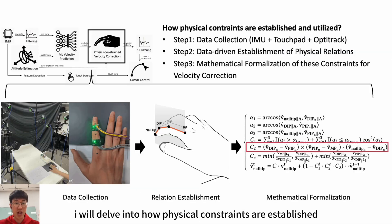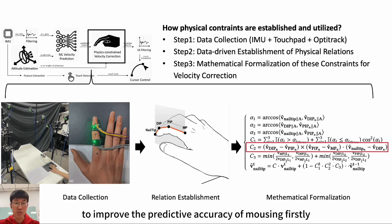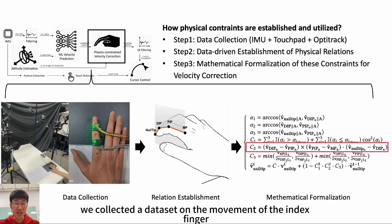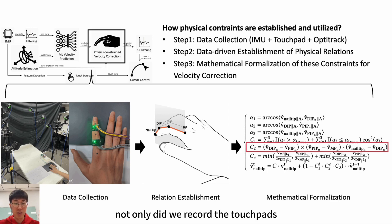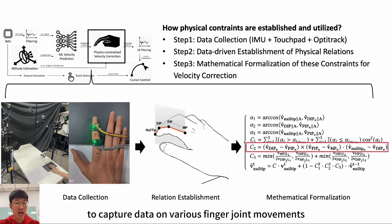Next, I will delve into how physical constraints are established and how they are combined with machine learning algorithms to improve the predictive accuracy of MouseRing. Firstly, we collected a dataset on the movement of the index finger on the touchpad with IMU rings, touchpad, and OptiTrack. Not only did we record the touchpad's touch positions and raw data from the IMU ring, but we also utilized an array of OptiTrack cameras with markers attached to the finger joints to capture data on various finger joint movements. Then, we employed a data-driven hypothesis testing approach and established several motion constraints between different key joints of the finger.